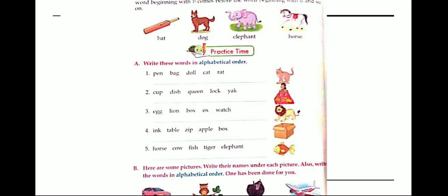Next, look at these words: bat, dog, elephant and horse. They are in alphabetical order.